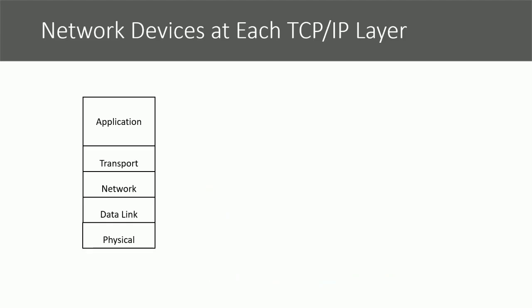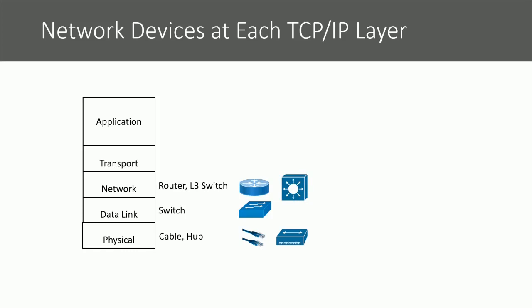Different network devices work at different layers of the TCP/IP model. At the physical layer, we have cables and hubs. At the data link layer, switches are the main devices. At the network layer, we have routers and layer 3 switches. At the transport layer, we have mainly firewalls. And at the application layer, we have next-generation firewalls with the intelligence to operate at that layer. We will discuss these devices and layers in more detail in the coming videos, but for now it is enough to understand the different layers and the PDU names at each layer.